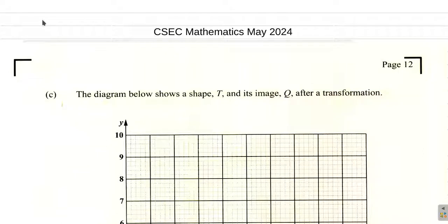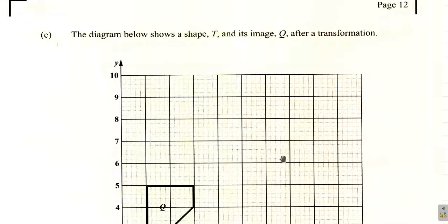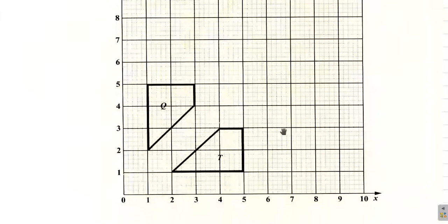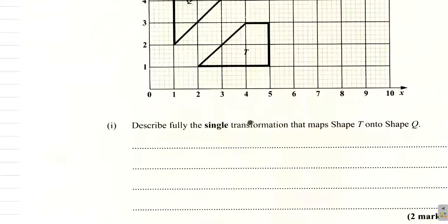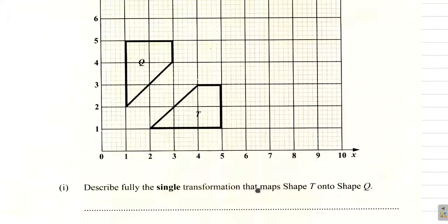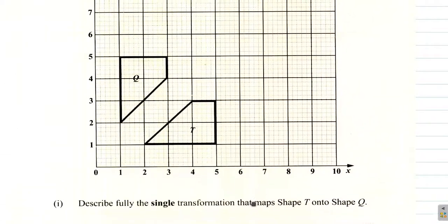We are now at part C of question 3 of the May 2024 CSEP Mathematics paper. The diagram shows a shape T and its image Q after a transformation. Describe fully the single transformation that maps T onto shape Q.